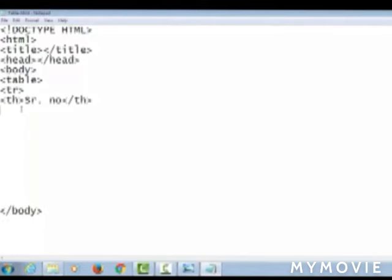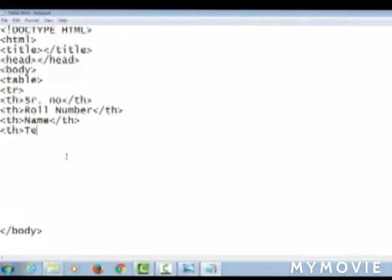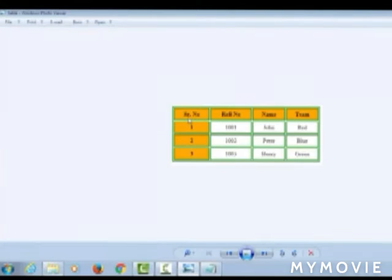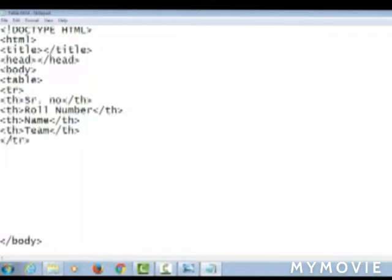Whatever I am writing in the cell is written in the th tag. As you can see the serial number, row number, name, and team is written, so I am writing it in the th tag. In one row, we complete the one row.